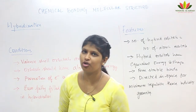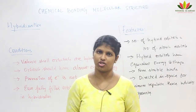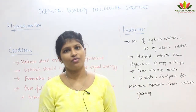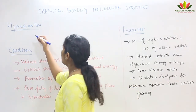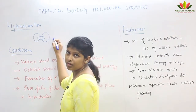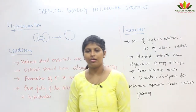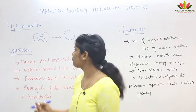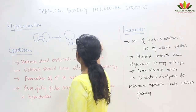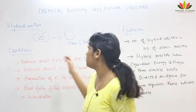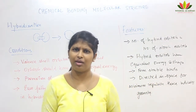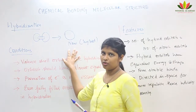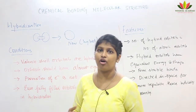Hello students, welcome to Wisdom Academy. I am Nasreen and today we will be seeing hybridization from chemical bonding and molecular structure. So what is hybridization, what are the conditions to form hybridization, and what are the special features of this process? Hybridization is when atomic orbitals intermix with themselves to form a new orbital, called a hybrid orbital.